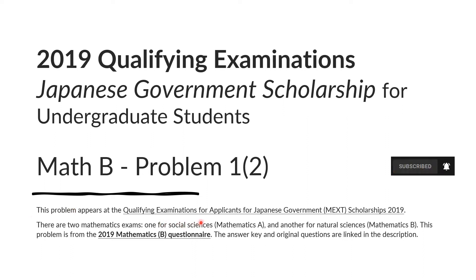This problem appears at the Qualifying Examinations for Applicants for Japanese Government MEXT Scholarships 2019. There are two mathematics exams, one for Social Sciences Mathematics A and another for Natural Sciences Mathematics B. This problem is from the 2019 Mathematics B Questionnaire. The answer key and the original questions are linked in the description.